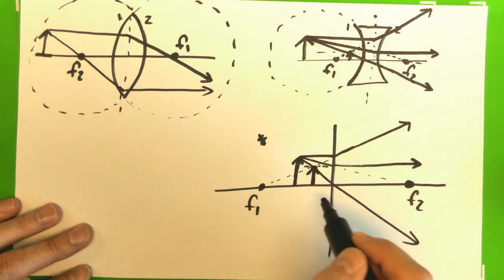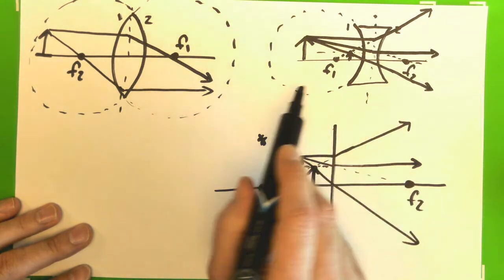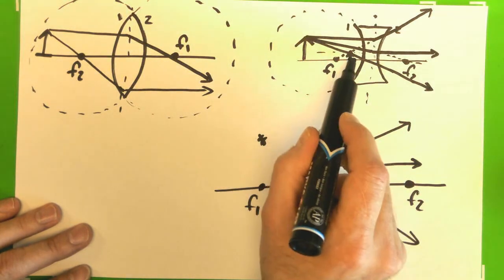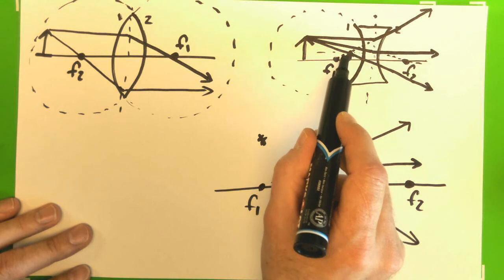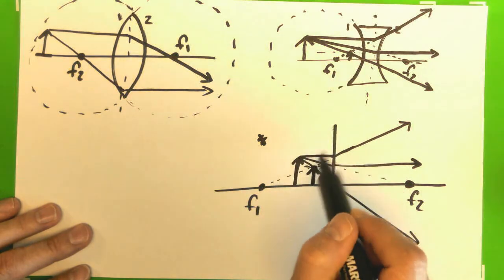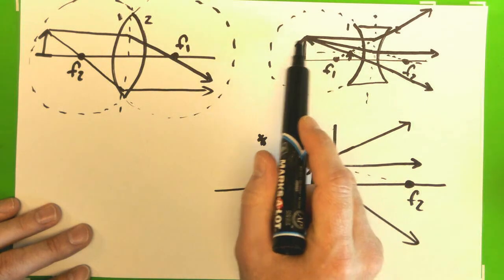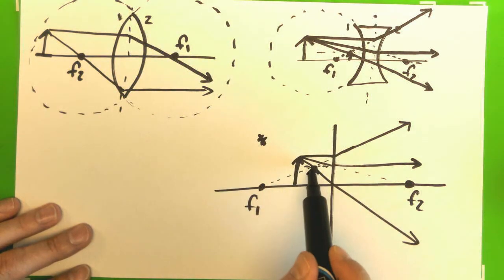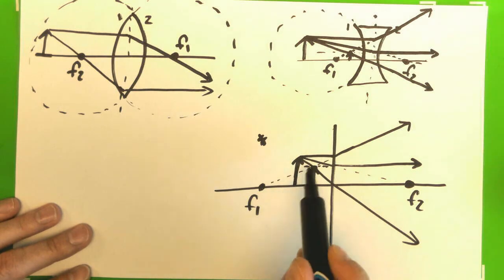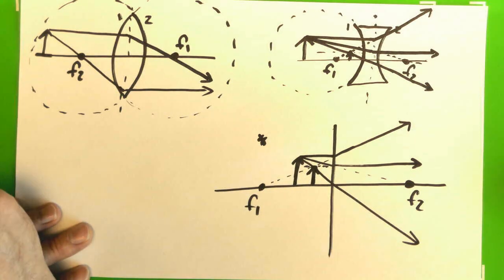So on a diverging lens, because of its diverging nature, the object or the image is always virtual. Light's not really coming from those locations. It seems to always get smaller. No matter how far away I get, or how close I get, it seems to be quite small. And so it gets smaller than the object.